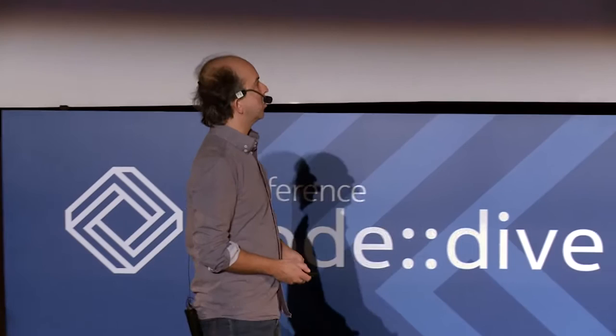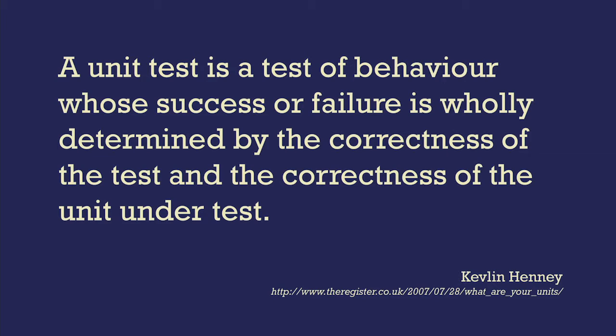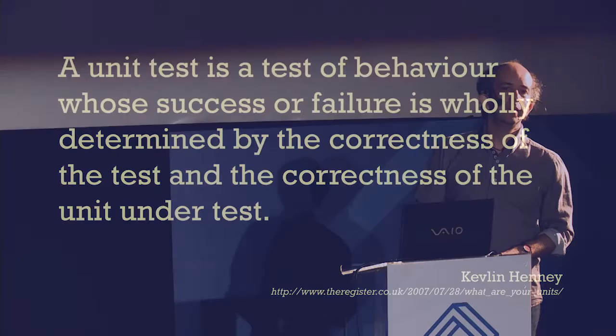The point is that it also makes assumptions about your execution model. This is the definition I presented nine years ago: a unit test is a test of behavior whose success or failure is wholly determined by the correctness of the test and the correctness of the unit under test. If your test fails because of a network failure, your code may well be correct and your test may well be correct — but the test has failed for reasons other than the correctness of the code. Similarly, if your code fails because of the way concurrency has been scheduled in your operating system, that is not directly to do with the correctness of your code — it is an external factor.